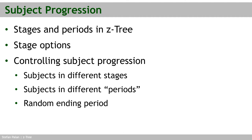In most experiments, subjects move through stages and periods together, so all the subjects are always in the same stage or in the same period. However, that is not the case in all experiments. In some experiments you want individual subjects or groups of subjects to move through the experiment faster or slower than others. The way to implement this is what we discuss in this chapter.